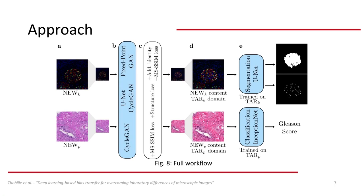In our experiments, we trained each network five times with different random seeds, and either on its own or in combination with the MS-SSIM loss, the structure loss, or the combination of the additional identity and the MS-SSIM loss, which we call combined losses.